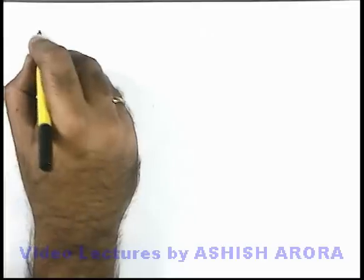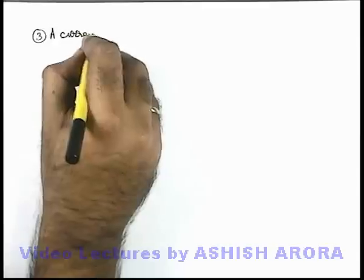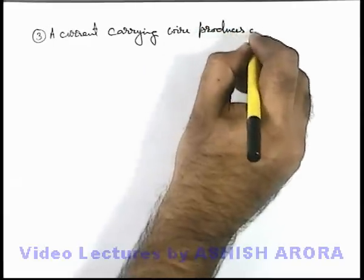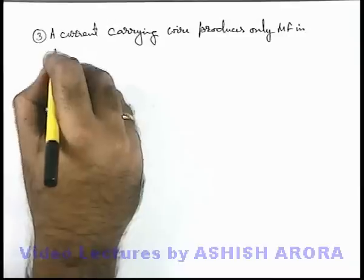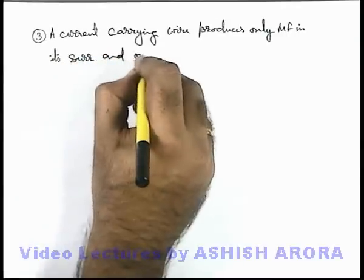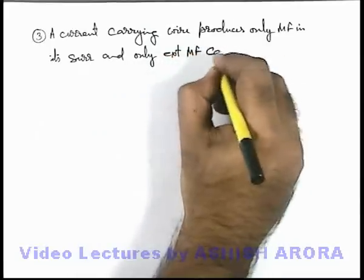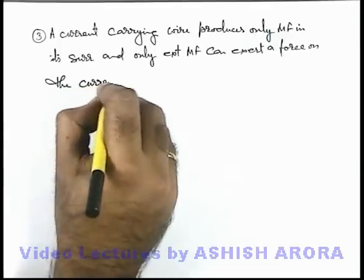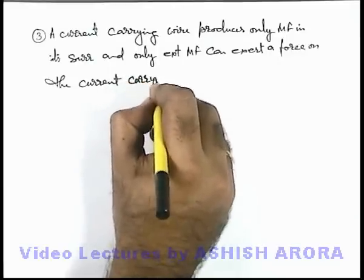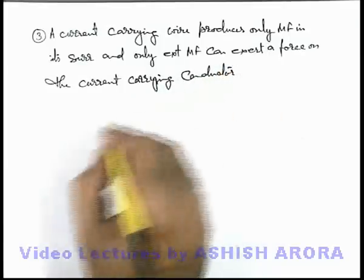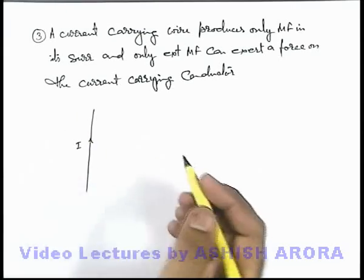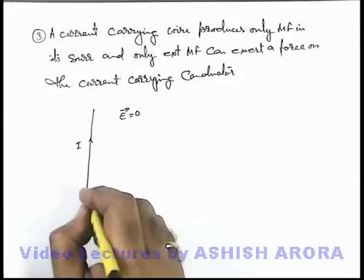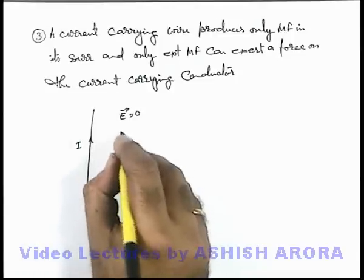Let's continue with the third point, which is about a current carrying wire, for which we can write that a current carrying wire produces only magnetic field in its surrounding, and only an external magnetic field can exert a force on the current carrying wire or current carrying conductor. This is because if we are given with a current carrying wire, as net charge on the wire is zero, in its surrounding the net electric field is zero — it does not produce any electric field because total charge on the wire is zero. But as there are moving charges, it produces magnetic field in its surrounding.